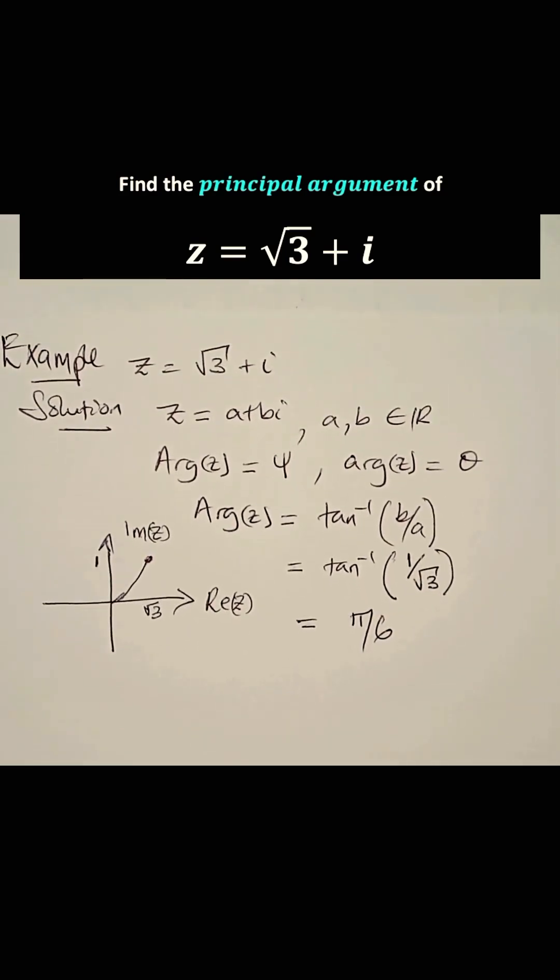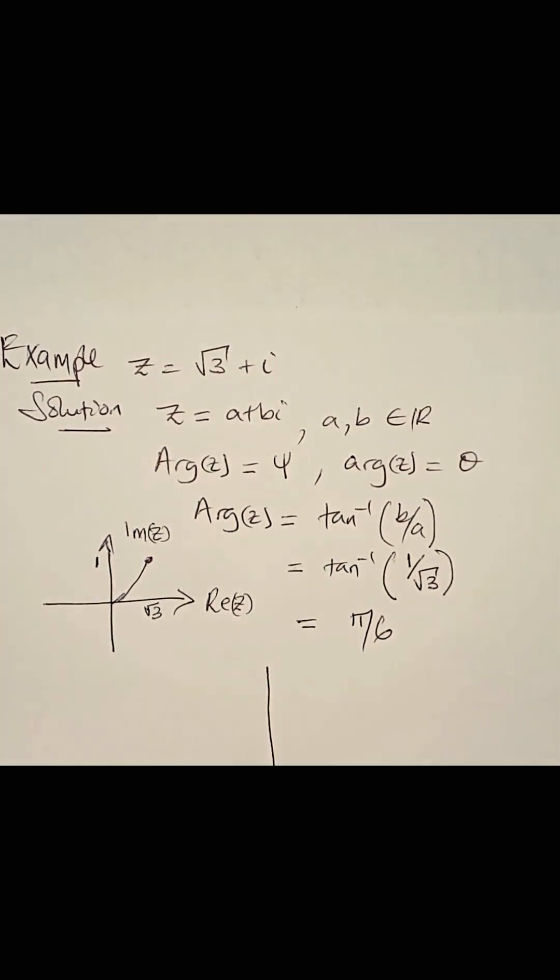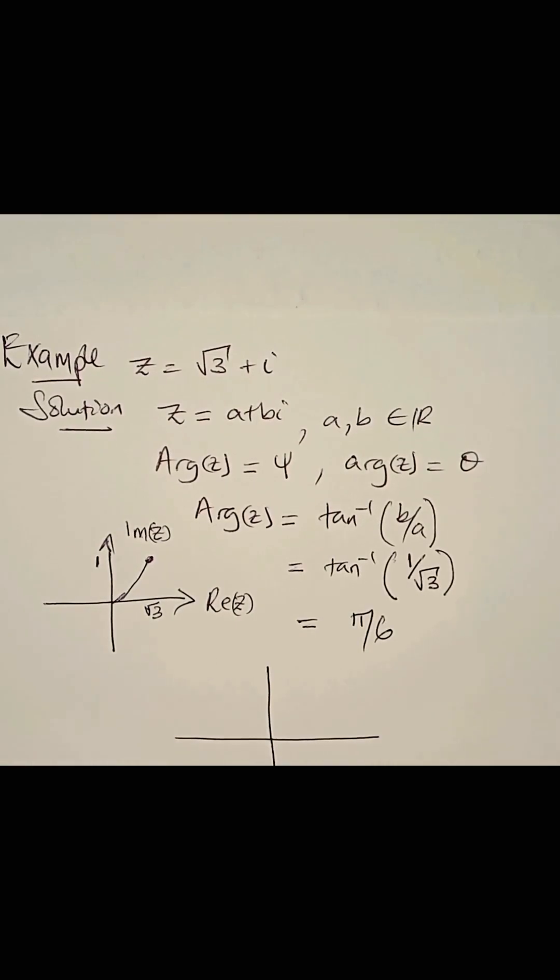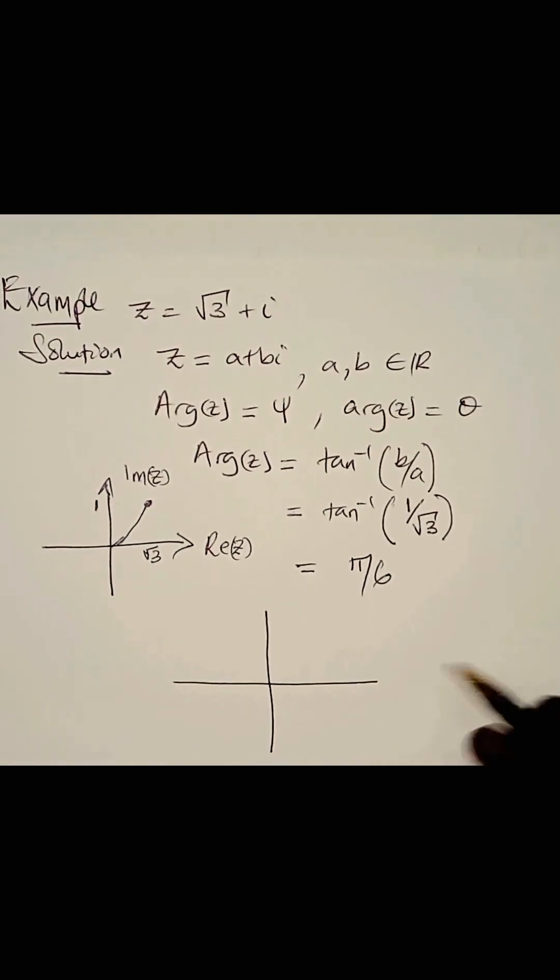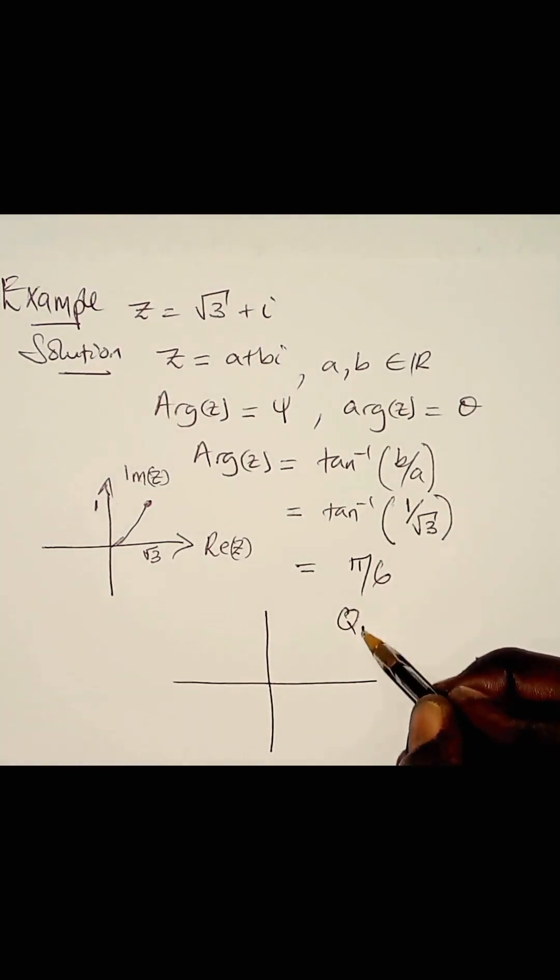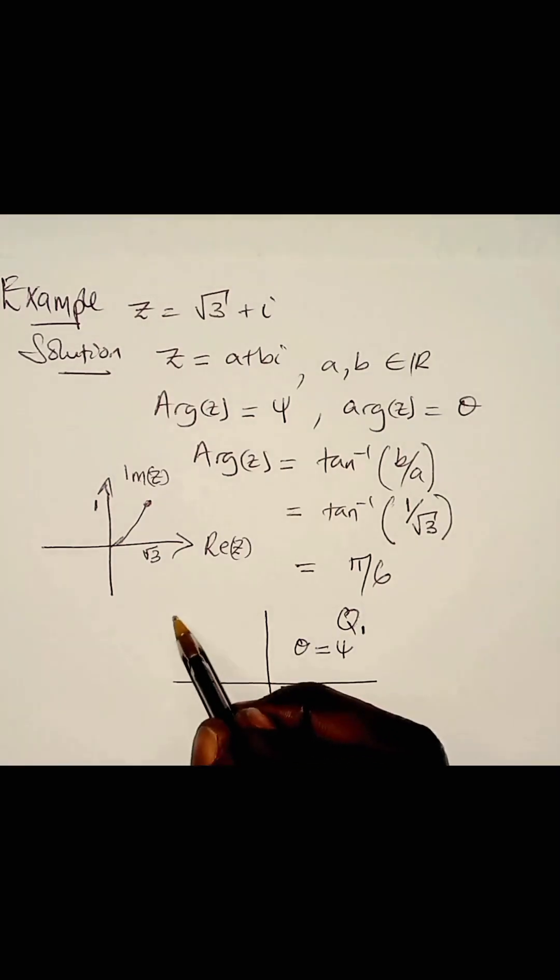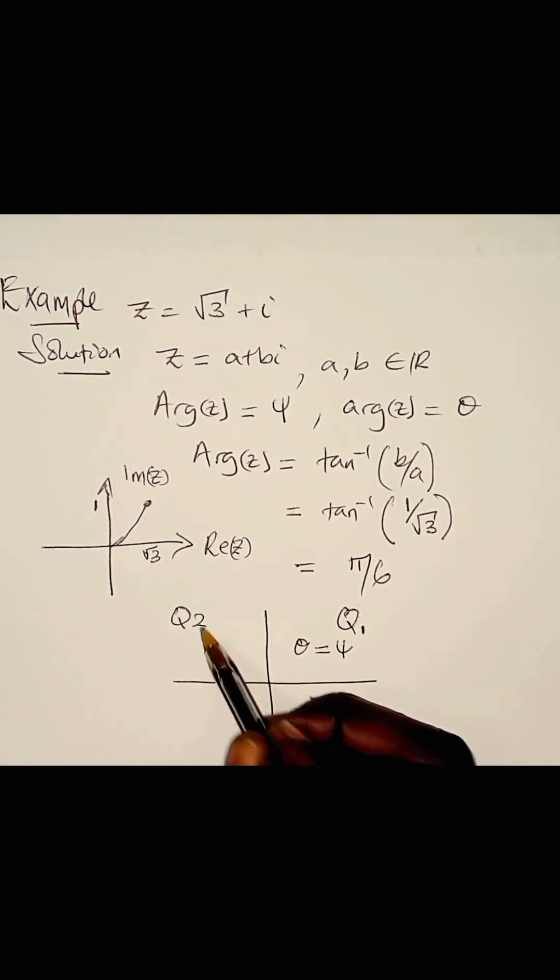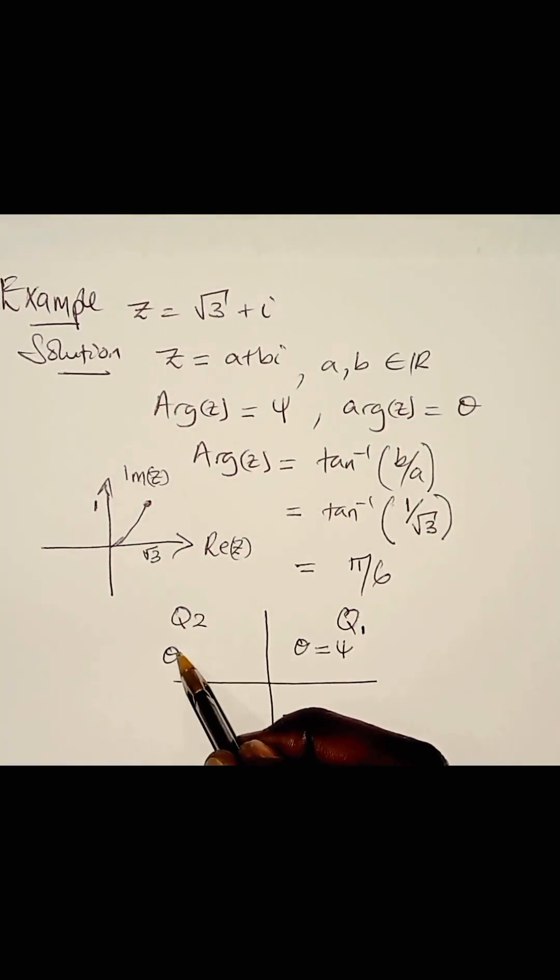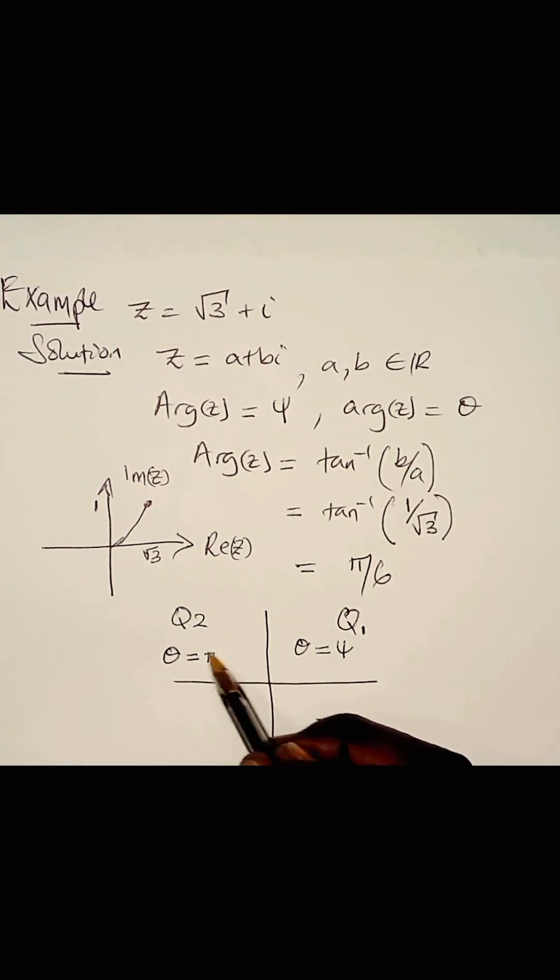Now, the formulae that you are going to use to find the principal argument are as follows. In quadrant 1, the principal argument theta is equal to phi. In quadrant 2, the principal argument theta is equal to pi minus phi.